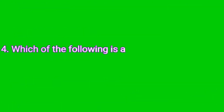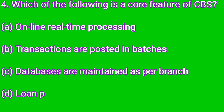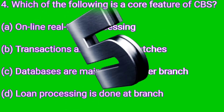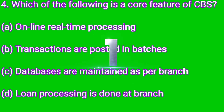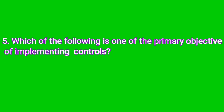Question number four: which of the following is the core feature of CBS? Option A: Online real-time processing. Option B: Transactions are posted in batches. Option C: Databases are maintained as per branches. Option D: Loan processing is done at branch. Option A is correct. Online real-time processing is the core feature of CBS — CBS stands for Core Banking Solution.